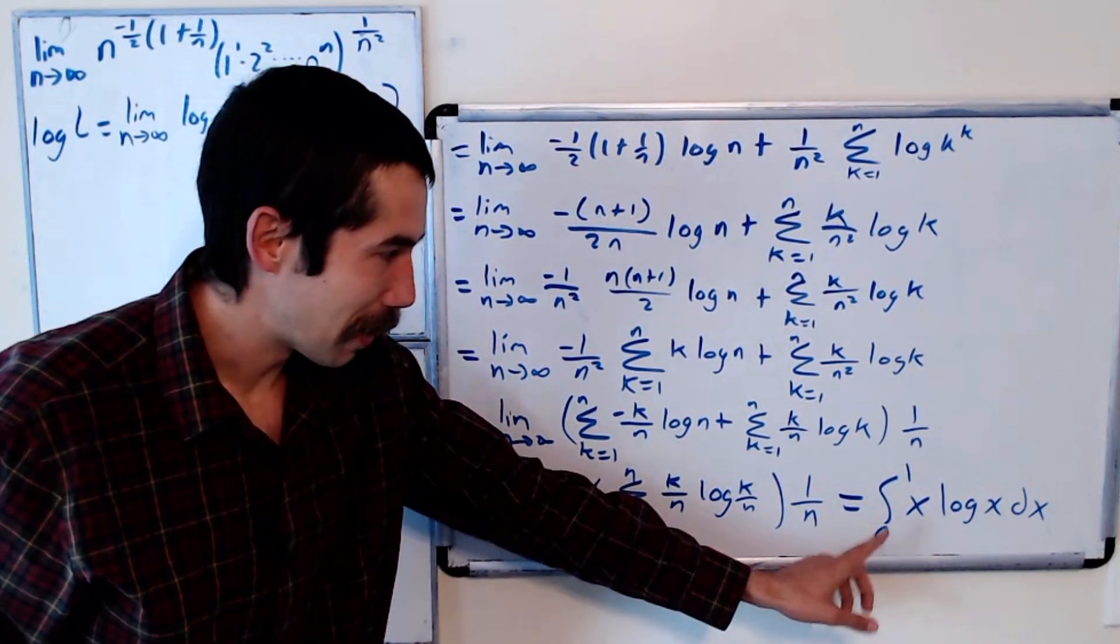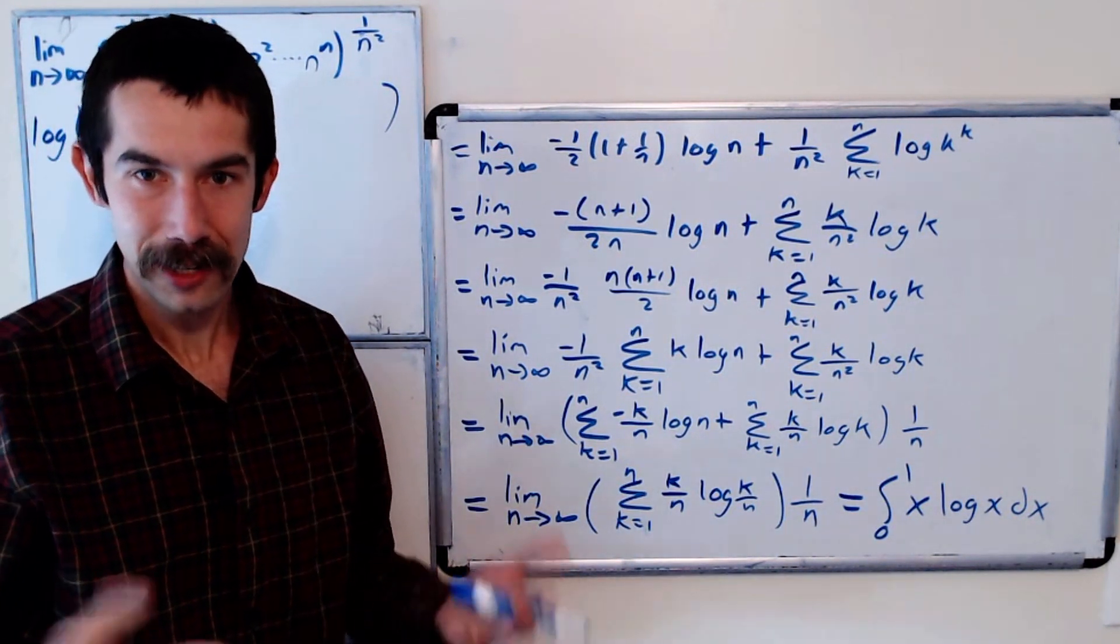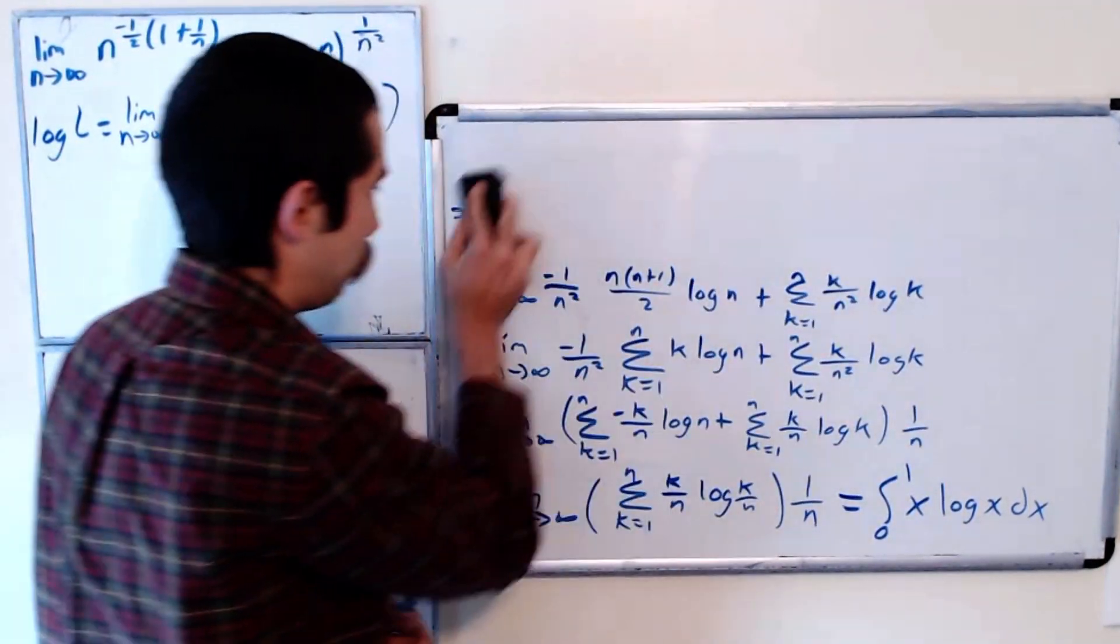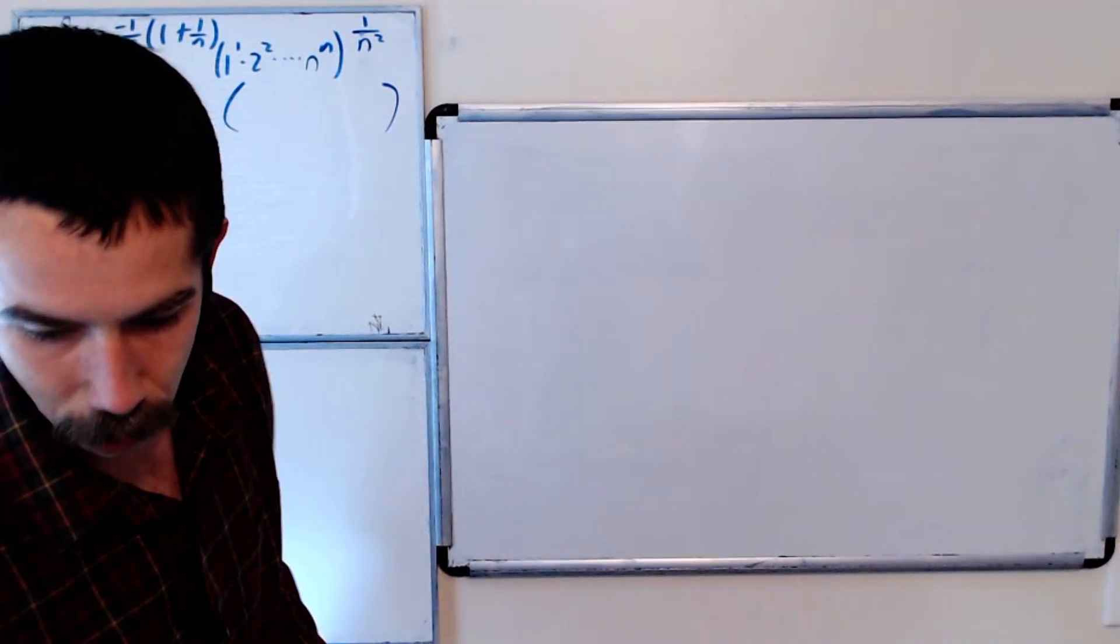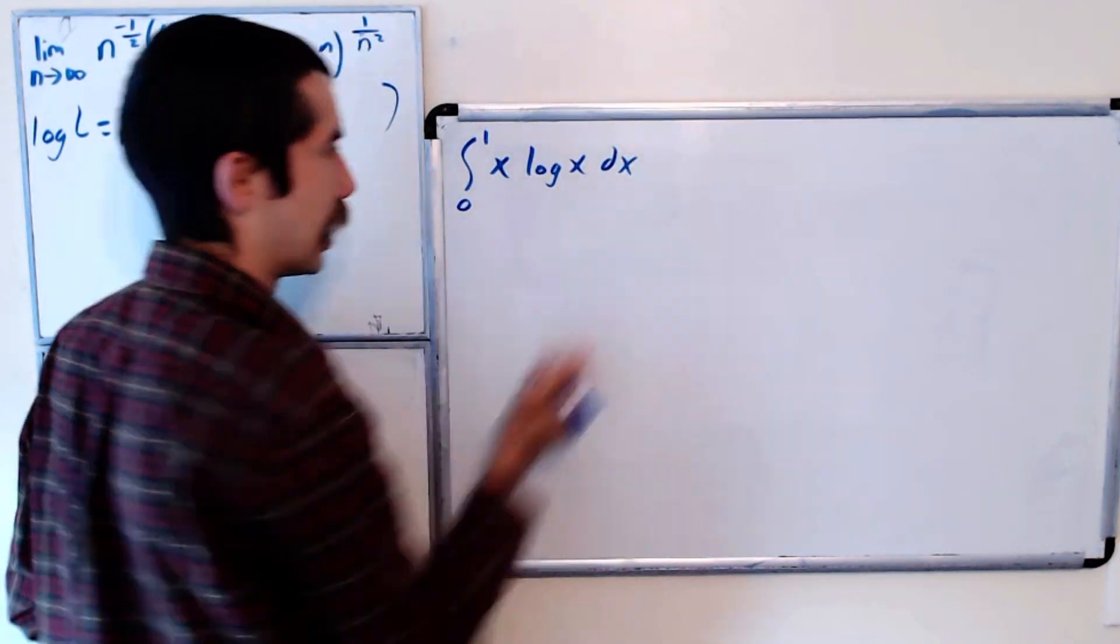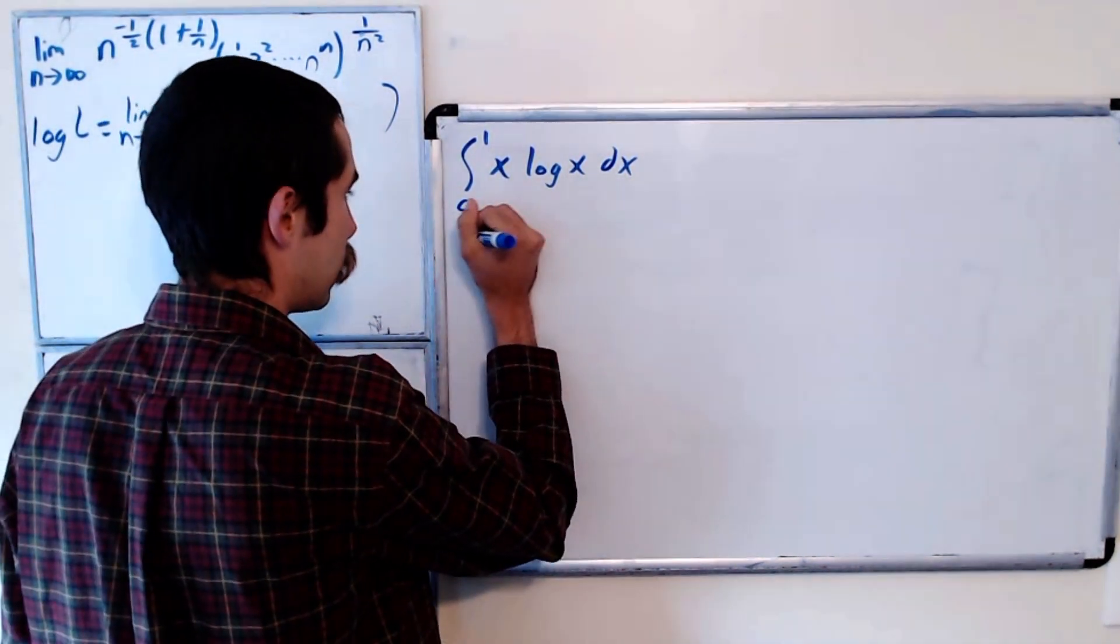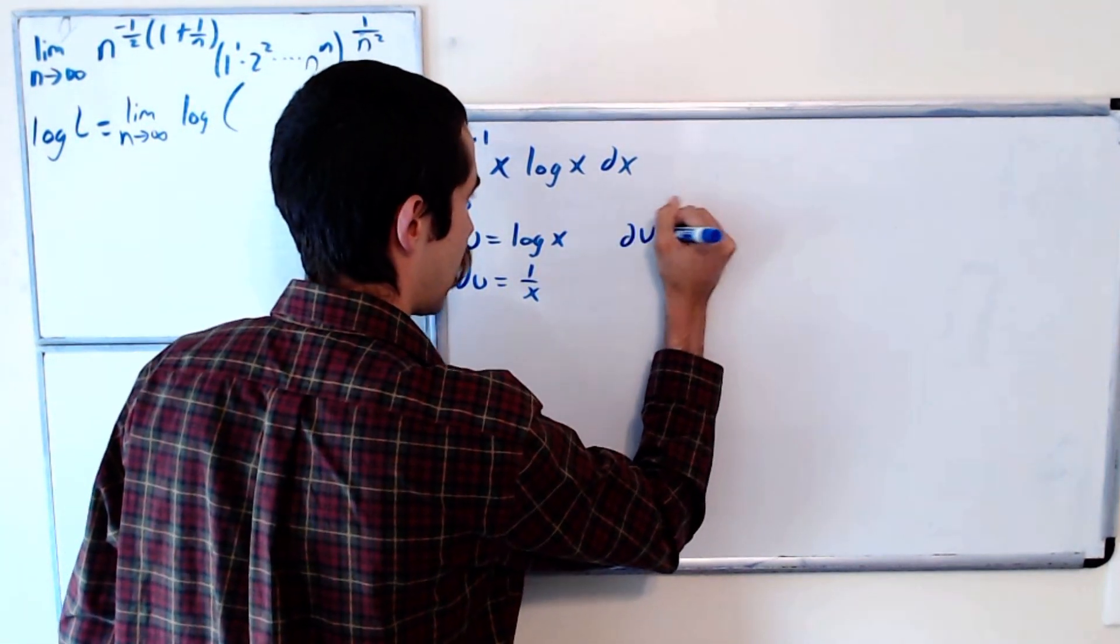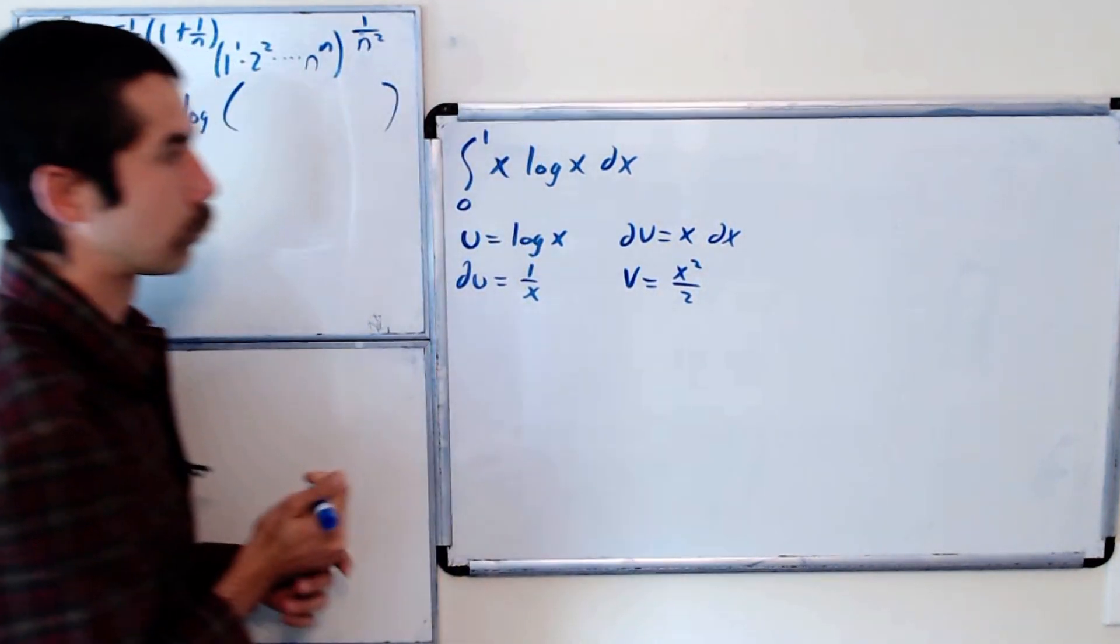Okay, so we need to evaluate the integral from 0 to 1 of x log x dx. This would be a good time to pause the video and try it on your own. See if you know how to evaluate this integral. But I'll do it up here. So we want to evaluate the integral from 0 to 1 of x log x dx. And this requires integration by parts. Okay, so we'll let u equal log x, du is 1 over x, dv is x dx, and v is x squared over 2.